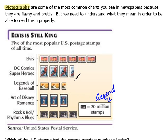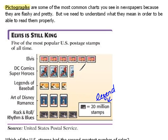One limitation of pictographs is dealing with partial icons. Each icon is worth 20 million, but if we have half an icon, that represents half that amount — 10 million. For example, three icons plus a half would be 60 plus 10, equaling 70 million stamps. The problem is that anything smaller than a half — like a third or a fourth — is very difficult to interpret just by looking at the picture. So pictographs work best with whole or half icons.